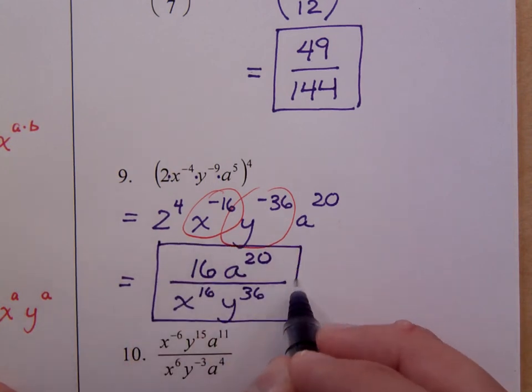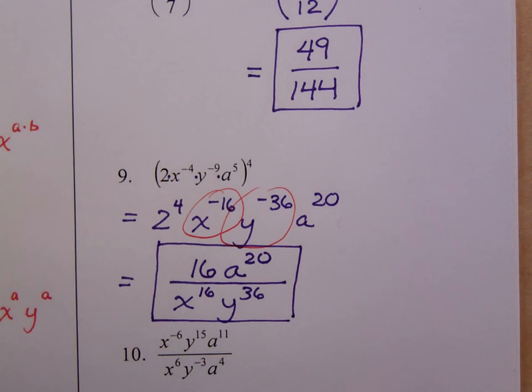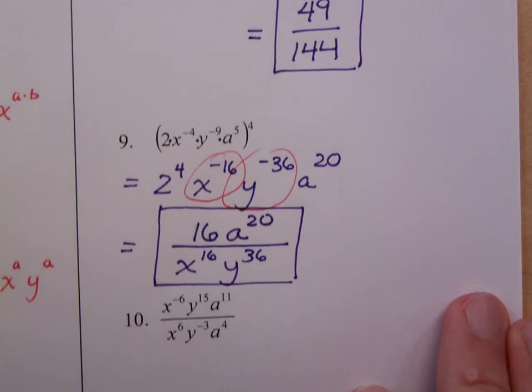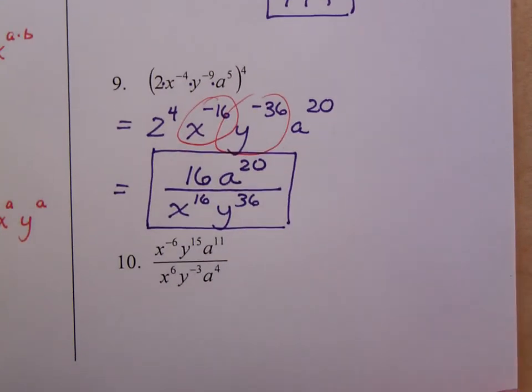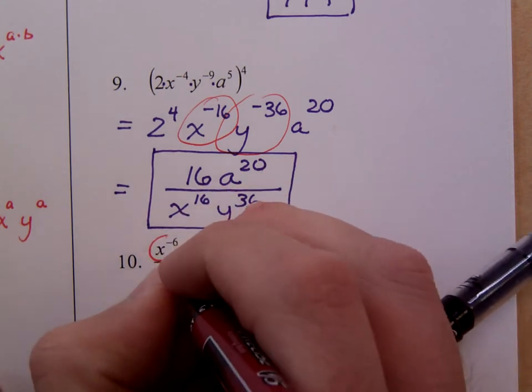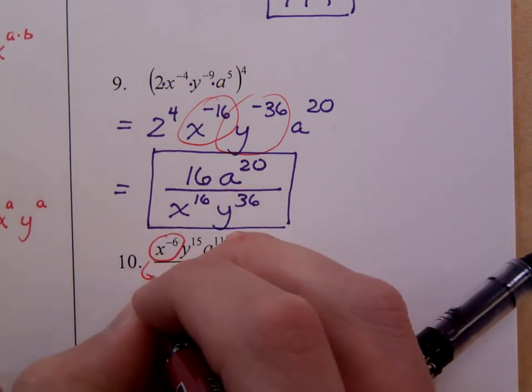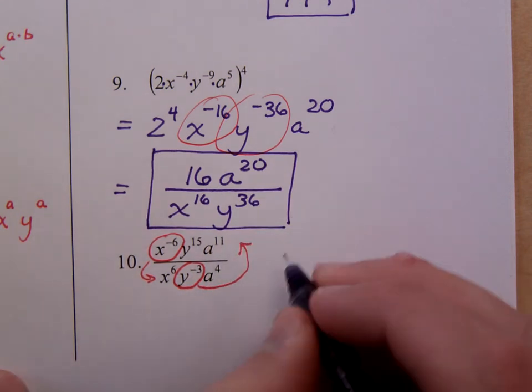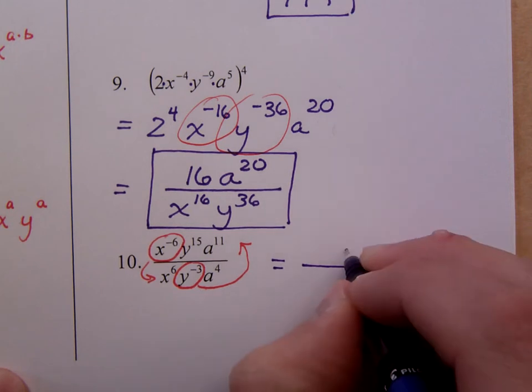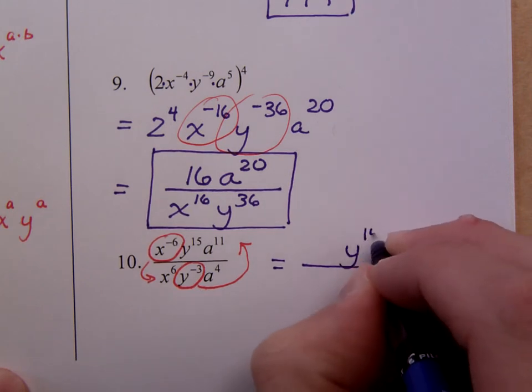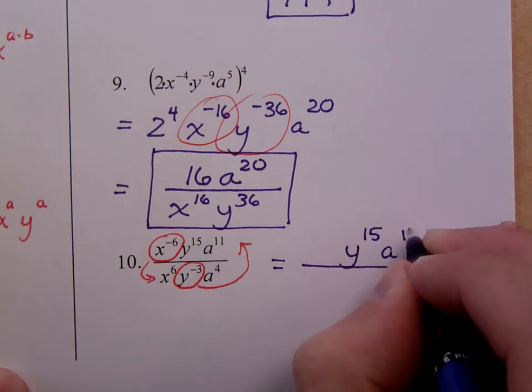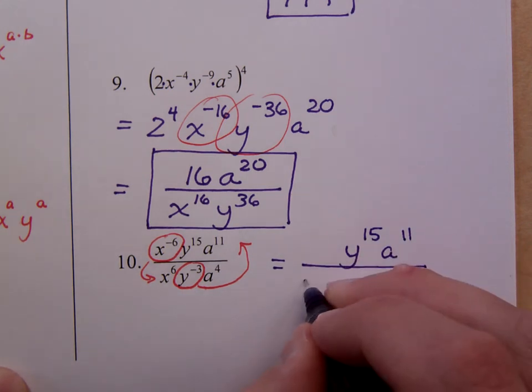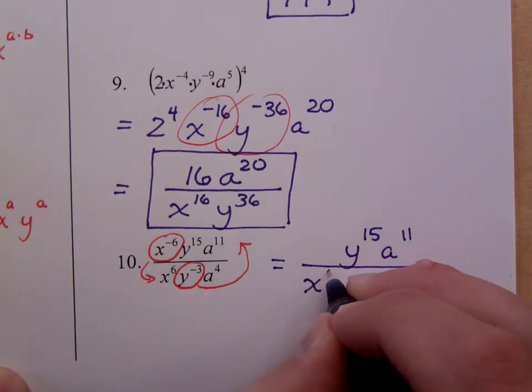Make sure that you leave your answers with positive exponents. You can have negative numbers as long as it's not an exponent. Finally here, number 10. You've got a lot of weird things going on here. You have some negative exponents that you need to take care of. So this guy needs to move into the denominator. This y to the negative 3rd needs to go to the numerator. Now when I rewrite this, watch what happens. This is still y to the 15th, a to the 11th. The positive exponents didn't move. You have x to the 6th and a to the 4th. Those guys didn't move.